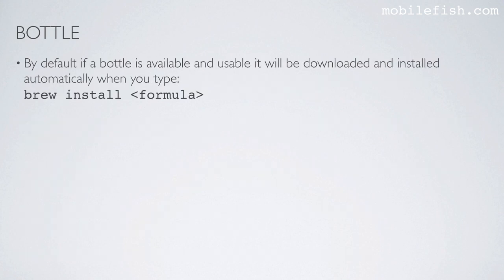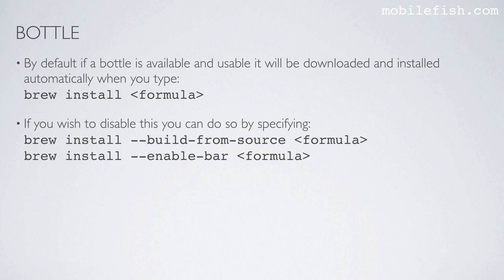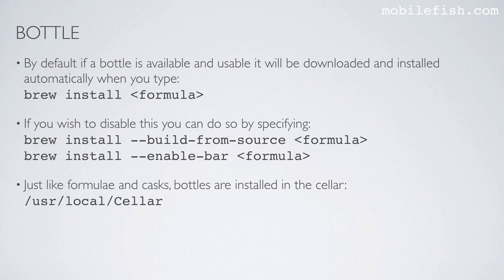By default, if a bottle is available and usable, it will be downloaded and installed automatically when you type this command. If you wish to disable this, you can do so by specifying this argument or this argument. Just like formulae and casks, bottles are installed in the cellar at this path.